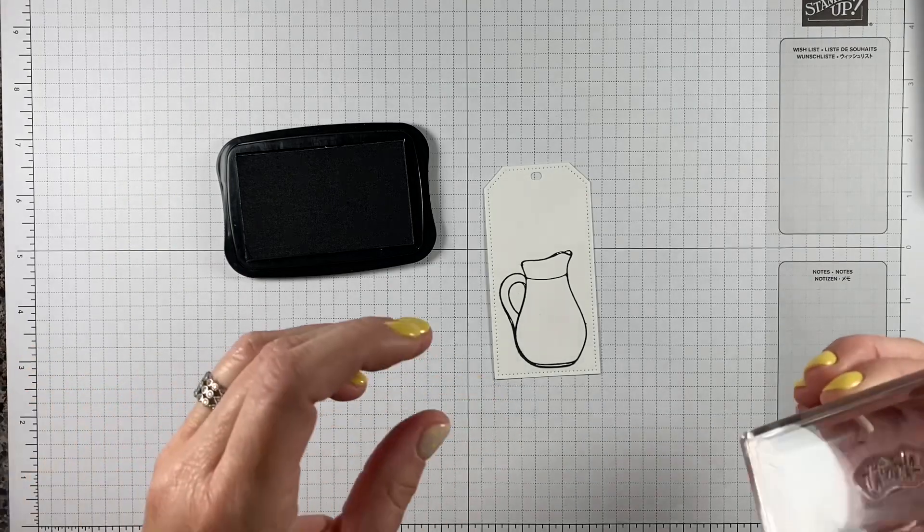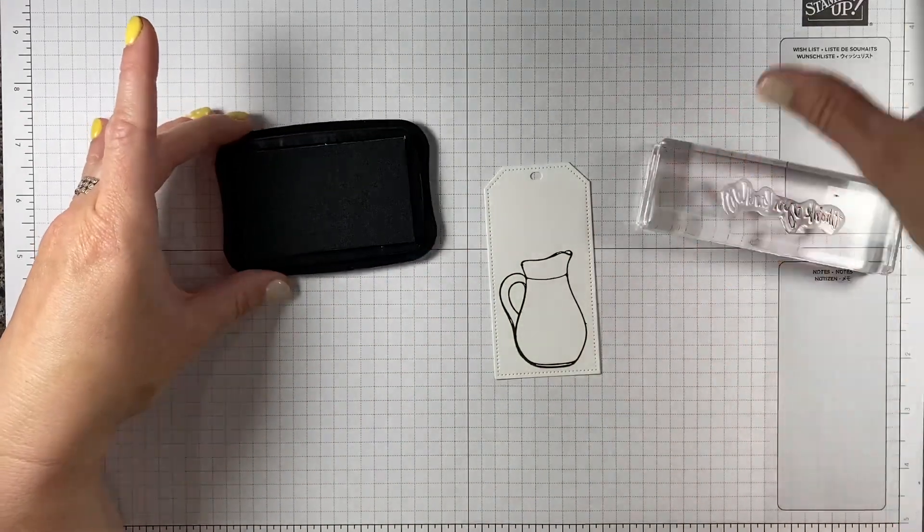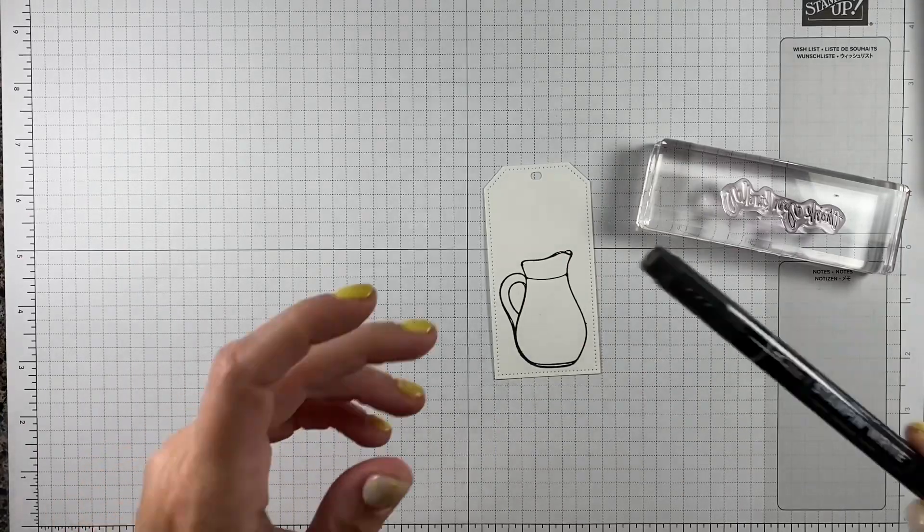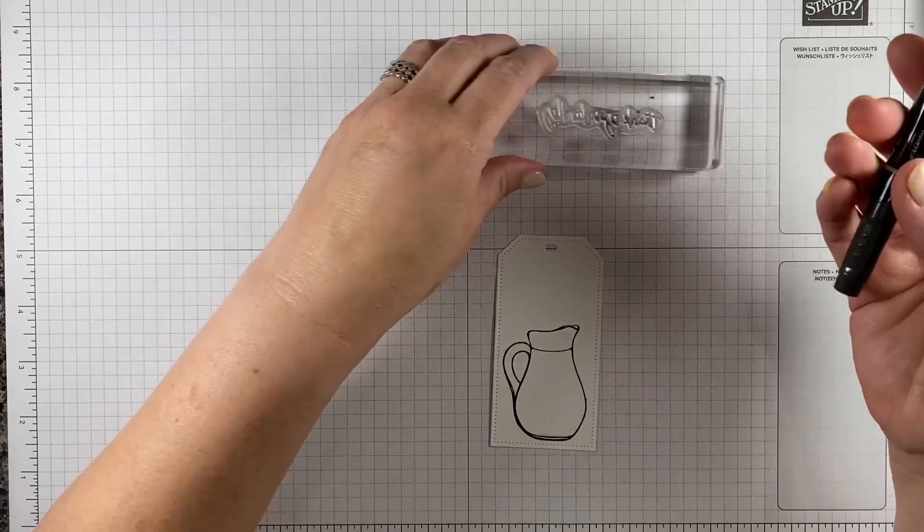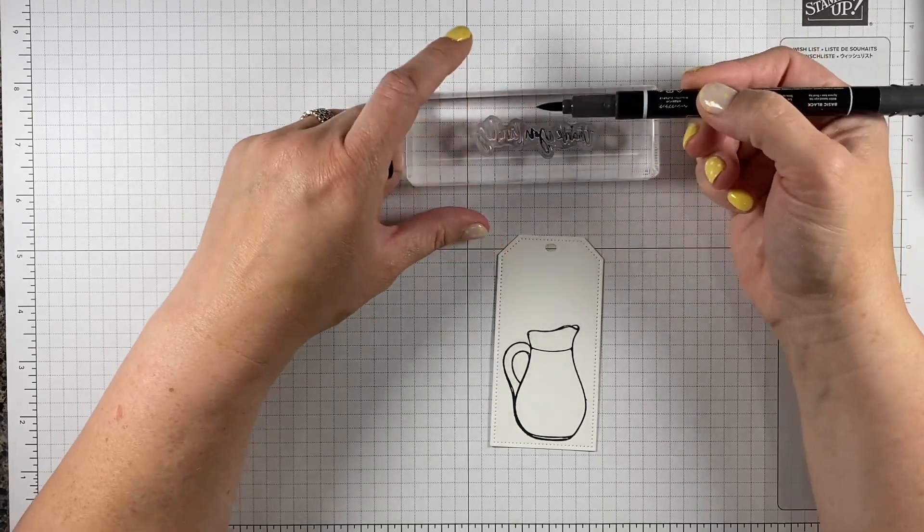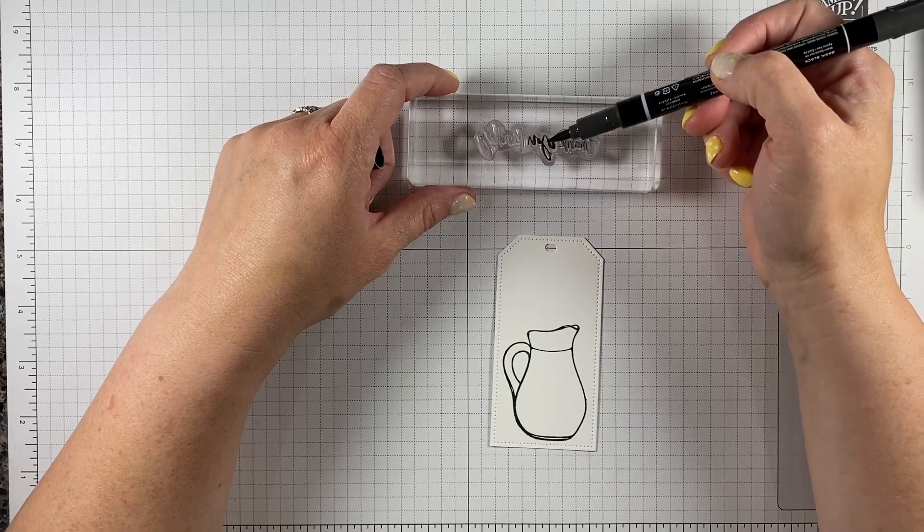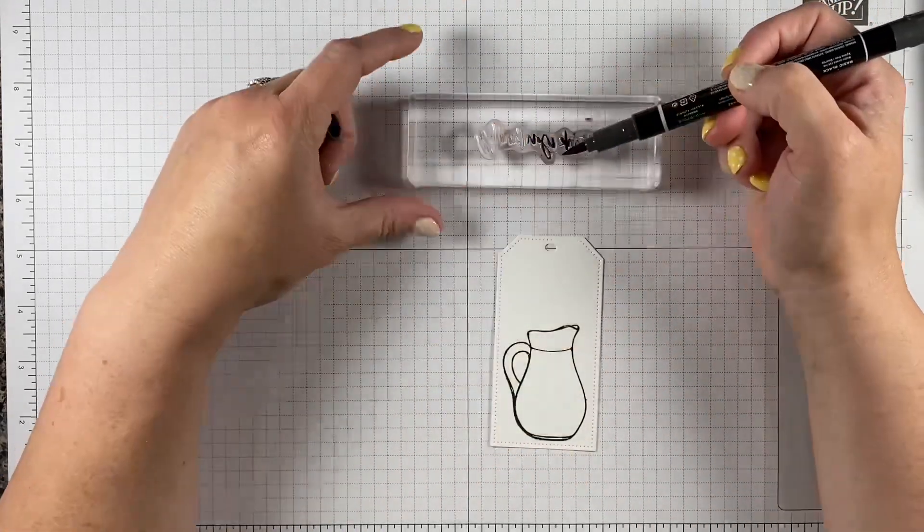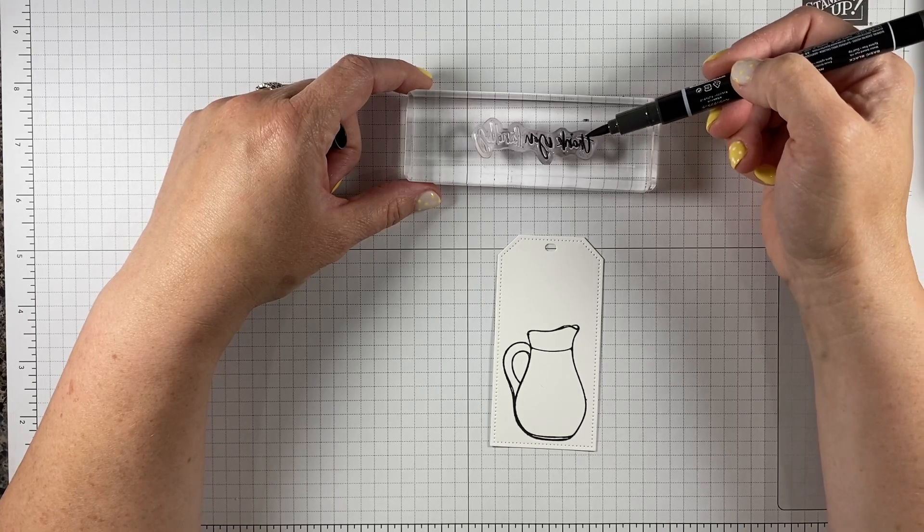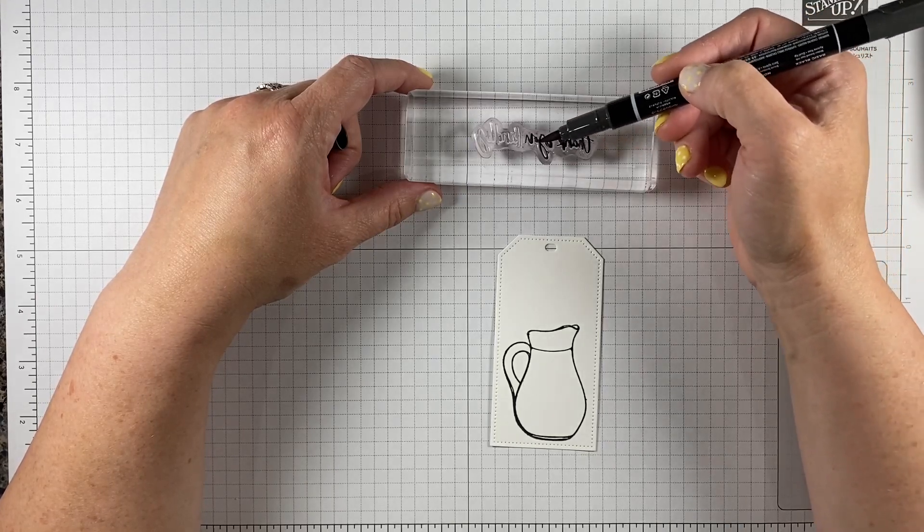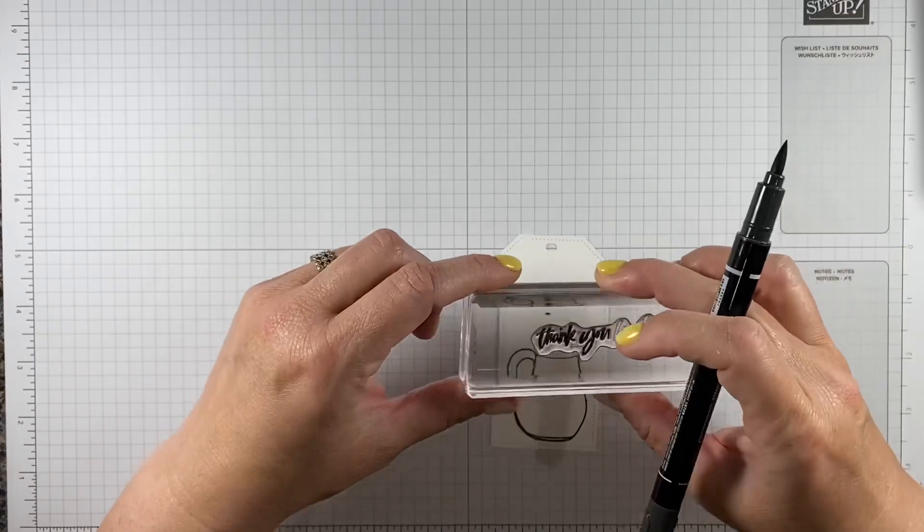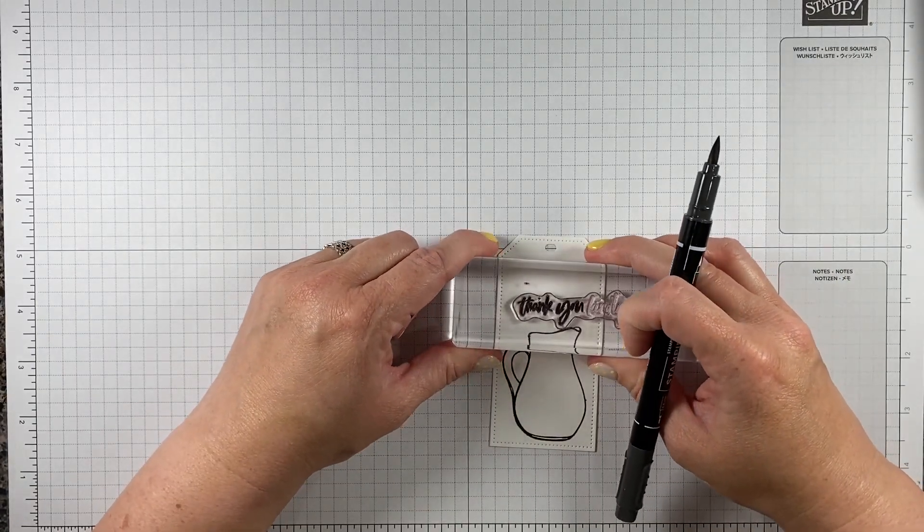One of the greetings in this set says thank you kindly, and I wanted to just use thank you since the width of this tag wasn't long enough for the entire phrase. That's where my Stampin' Write marker comes in very handy. The brush tip is designed to ink up a stamp. Notice I'm using the side of the brush, I don't want to go right in with the tip, that'll fray it. I'm using the side of the brush tip and getting black ink all over the words thank you.